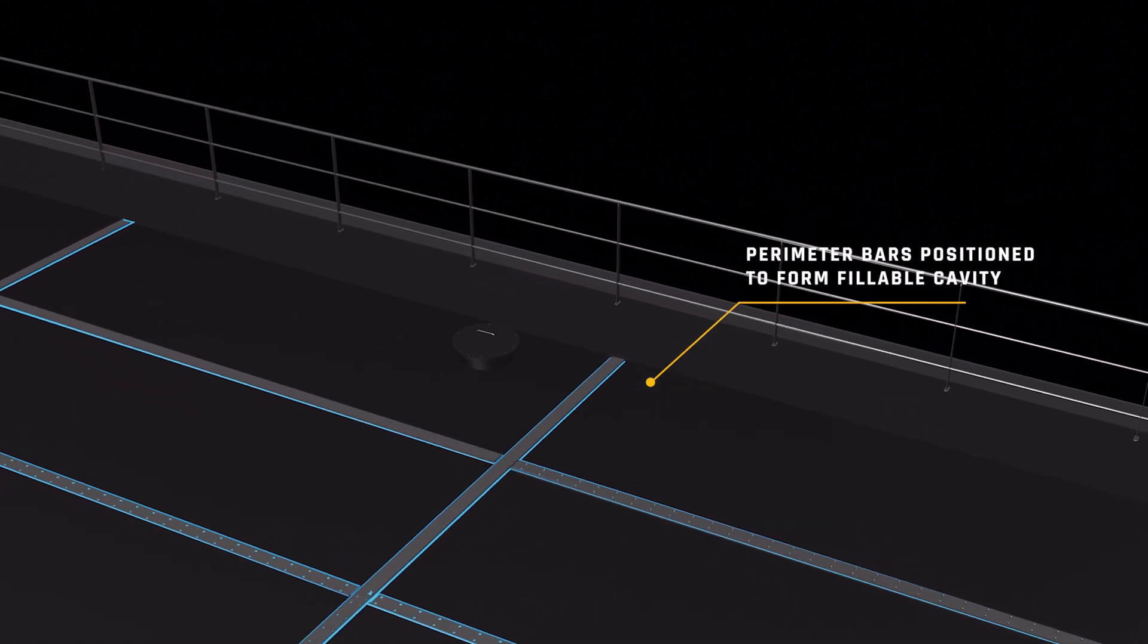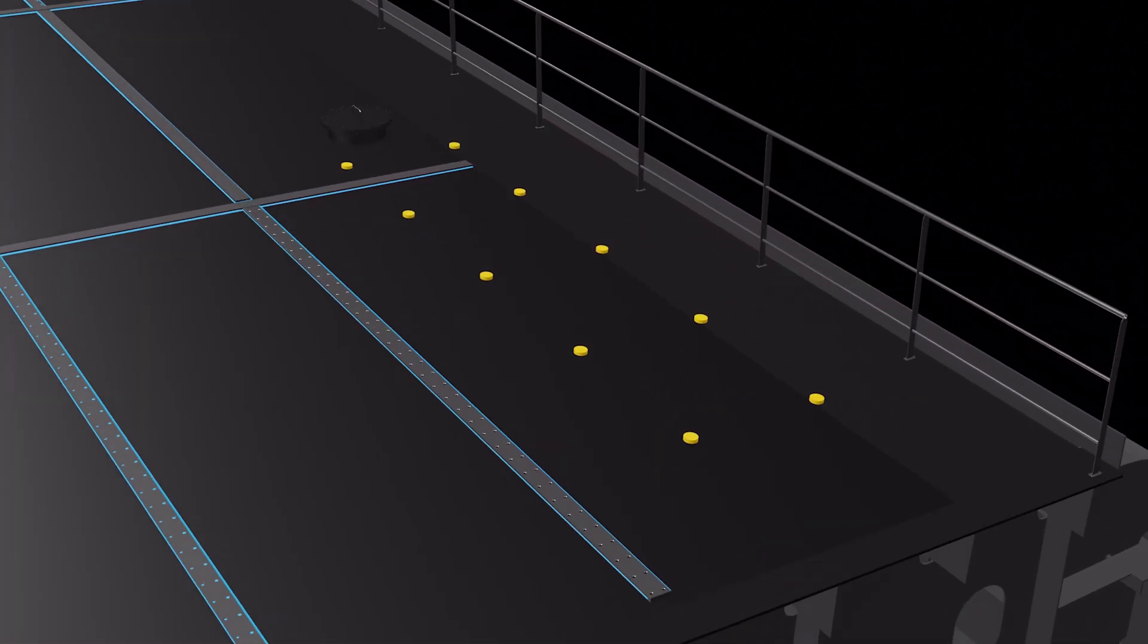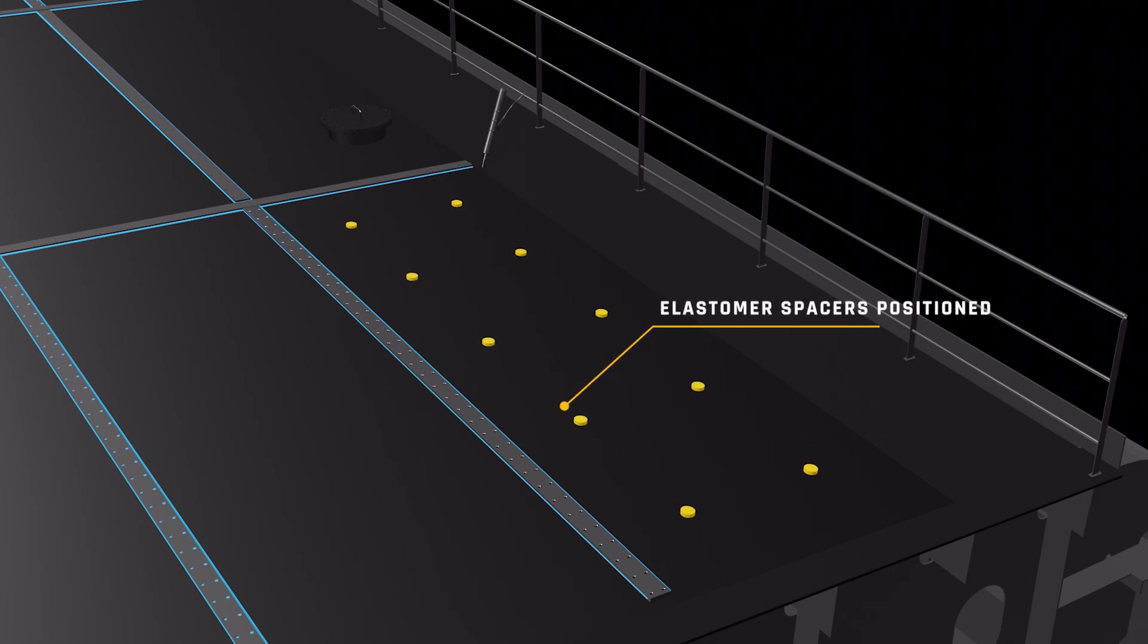Elastomer spacers are positioned inside the cavity to ensure the correct spacing of plates across the cavity and prevent the new top plate from sagging, maintaining a flat new surface across the deck.